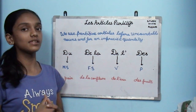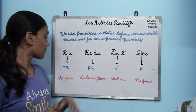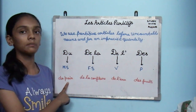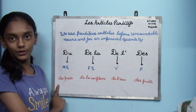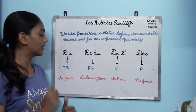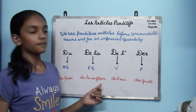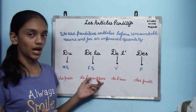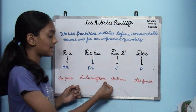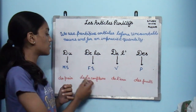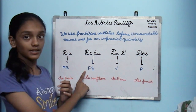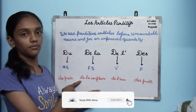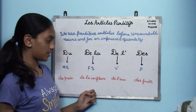Here's an example: du pain. Pain is bread. Since pain is a masculine word, we use du. Then we have de la confiture. Confiture is jam. It has an S at the end but it is singular, so we place de la in front of it.